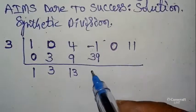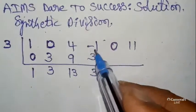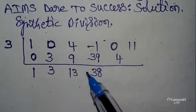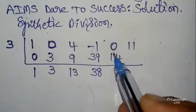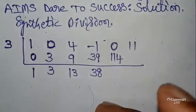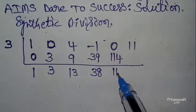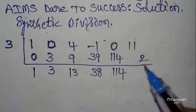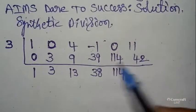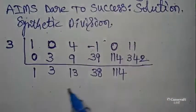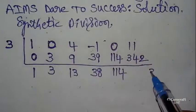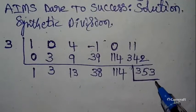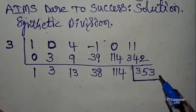Addition: 39 + (-1) = 38. 38 × 3 = 114. Next addition: 0 + 114 = 114. Cross multiply: 114 × 3 = 342. Next addition: 1 + 342 gives us 353 at the end. So the result of this first synthetic division row ends with 353.